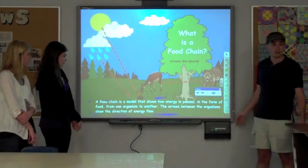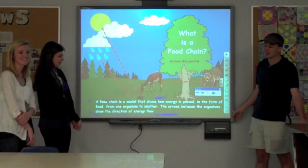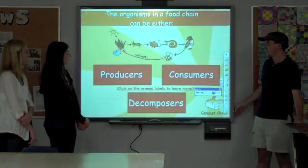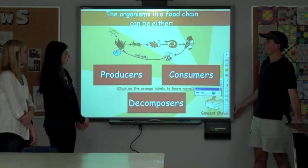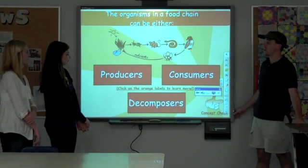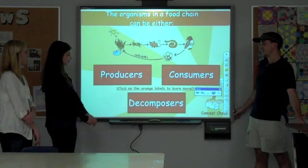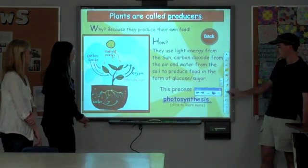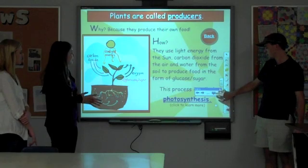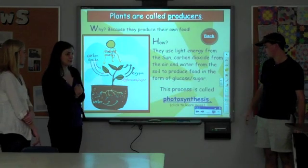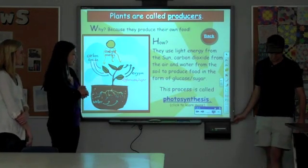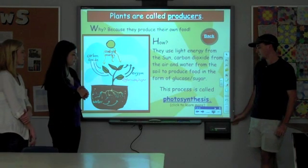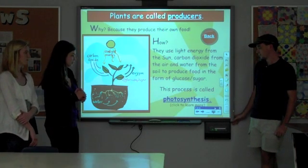The deer is in turn eaten by the bear. Now we're going to learn about the three types of organisms that can be found in a food chain. Plants are called producers — it's because they produce their own food. They use light energy from the sun, carbon dioxide from the air, and water from the soil to produce food in the form of glucose or sugar.